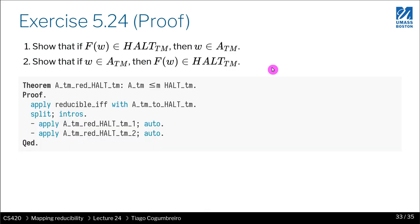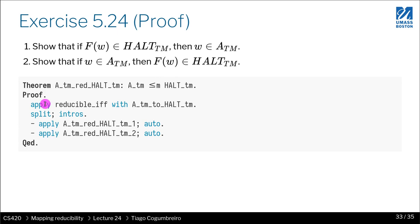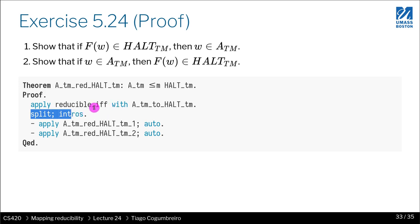We are now ready to prove that ATM map-reduces to Halt-TM. We use 'reducible_if_underscore_if' to construct a map-reducible thing — there are multiple ways of doing it, you can just open the definition, but the easiest way is to use this theorem. Then you're left with an equivalency, and each of the cases requires showing the two sides of the equality: first, show that f(W) belongs to Halt-TM implies W belongs to ATM; and then the reverse, if W belongs to ATM, show that f(W) belongs to Halt-TM.